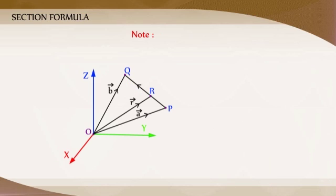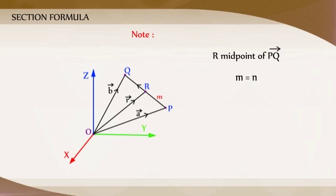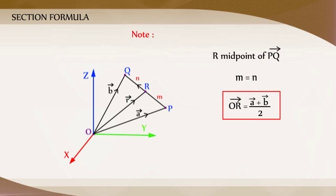Note: If R is the midpoint of PQ, then M is equal to N. Therefore, from Case 1, the midpoint R of PQ will have its position vector as OR vector is equal to A vector plus B vector divided by 2.